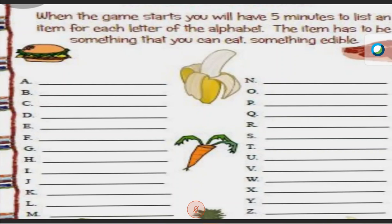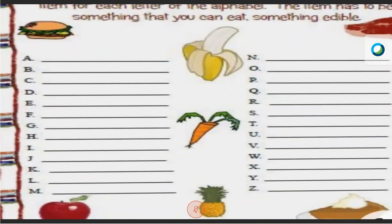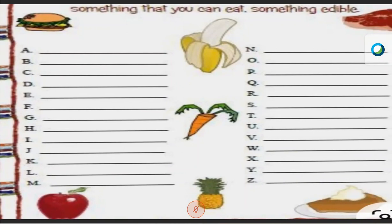D — donuts, drumsticks, dahl. Very good. E for egg. All are saying egg. F for fish, French fries, fig. Very good. G for ginger, grapes, garlic bread. Very good. H for honey, halwa. Very nice. I for ice cream — all are saying ice cream. What else? Idli. Wow, good. I for idli also. Then J — jackfruit, jelly, jam. Wow. J for gems, jam, jackfruit, jelly. K for kiwi. Very good.